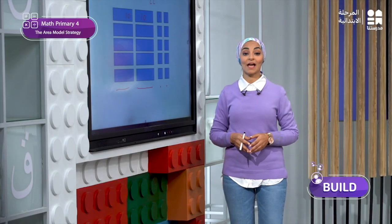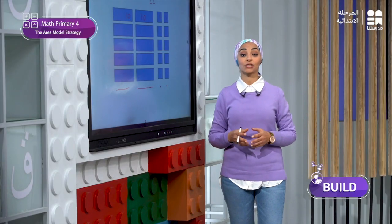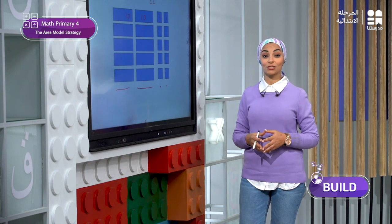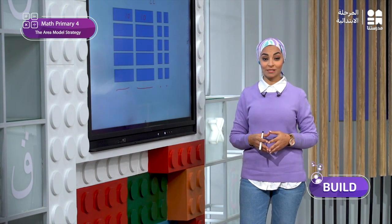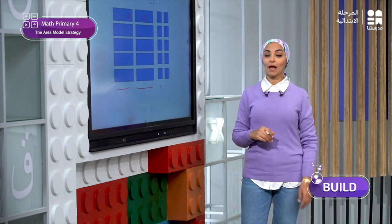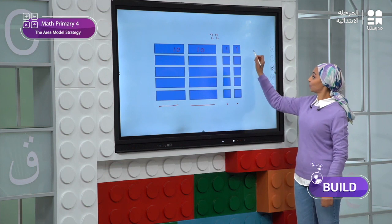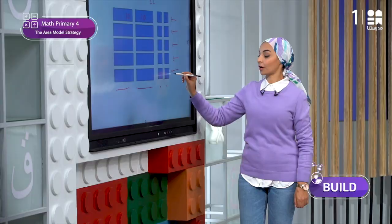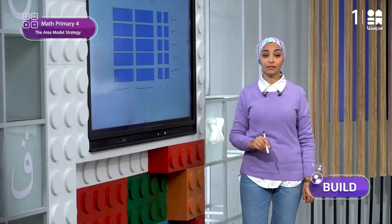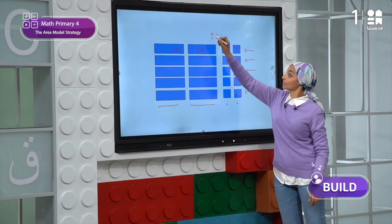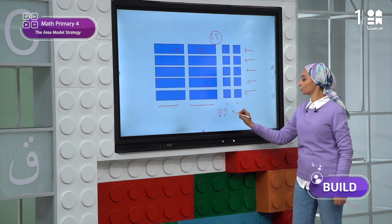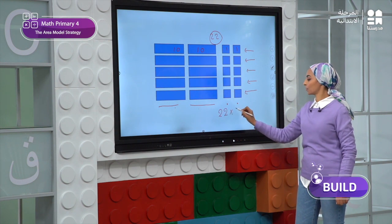Let's write this array as a multiplication problem to find the maximum number of passengers the river bus can carry. We have 5 rows, and each row has 22. So I can write 22 times 5.